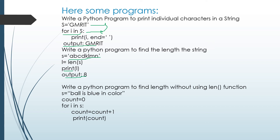The next program: write a Python program to find the length without using the len() function. I gave s = 'ball is in blue color'. Taking a variable count = 0, then 'for i in s', it counts positions of each character. Then count = count + 1, and print(count). The output would be the length of the string, which is 16.